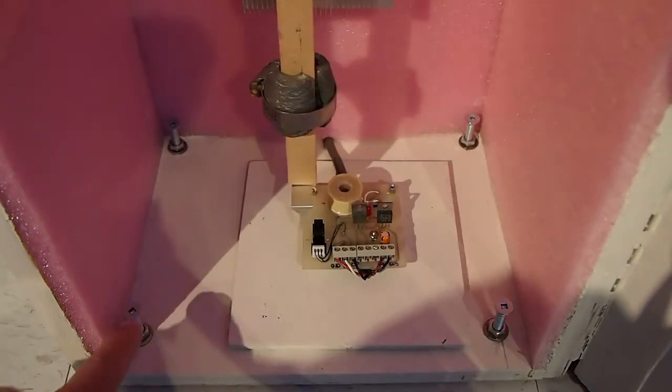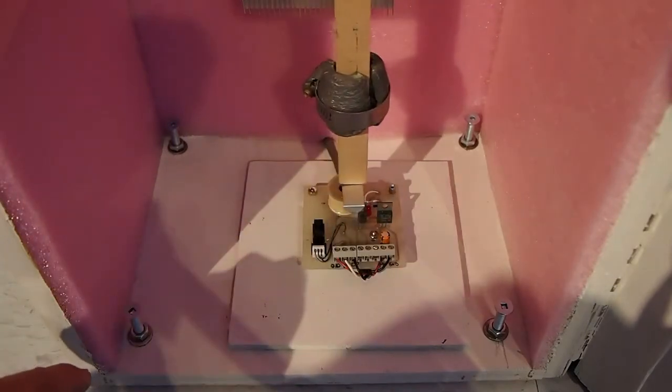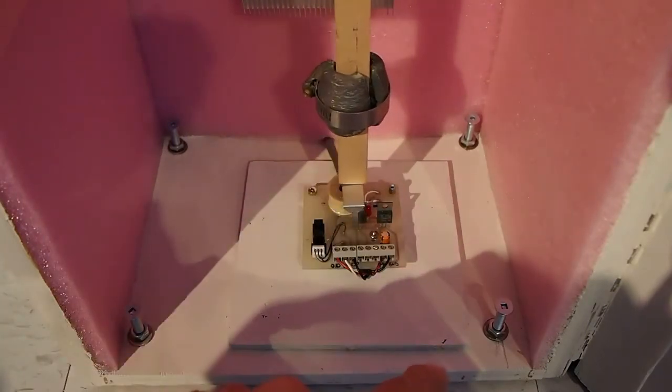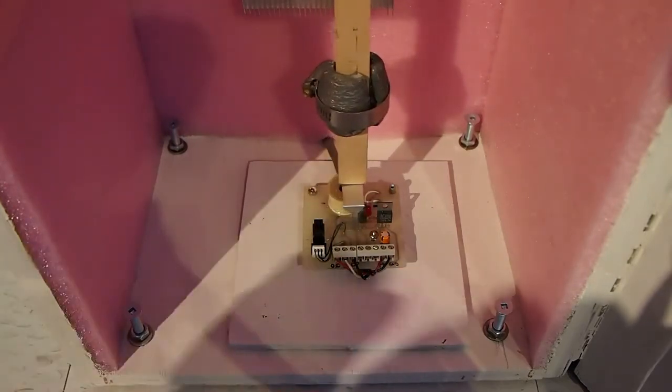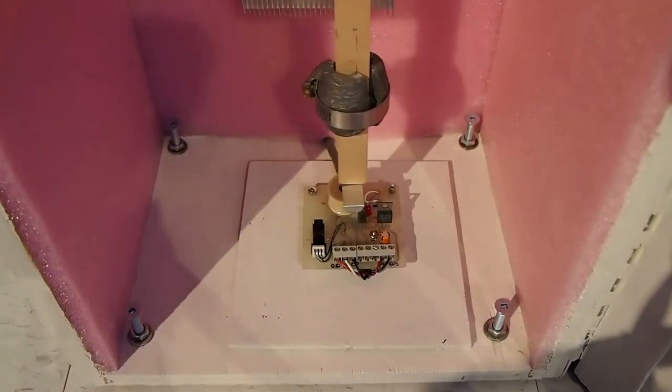And you adjust three of them. And then the fourth one, you tighten until the box. You try to vibrate the box and make sure it's really stable and it doesn't really move at all at the bottom. And also use a level to make sure the box is at level.